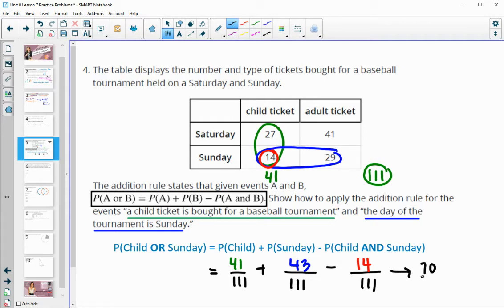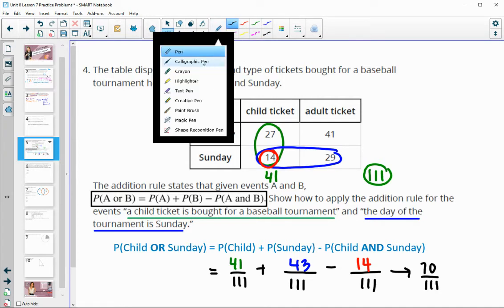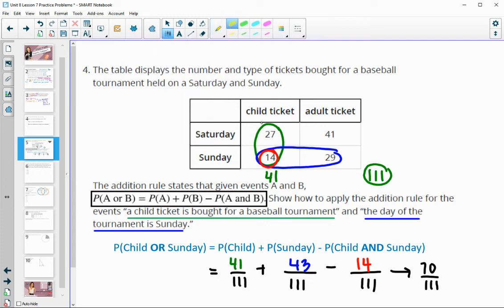So 70 out of 111 would be the probability of child's or Sunday. And then we could also just take a look at actually adding these, so 27, 14 and 29 looking in this table. And if we add those together, so 27, 14 and 29, we also see that it's 70 out of the total of 111.